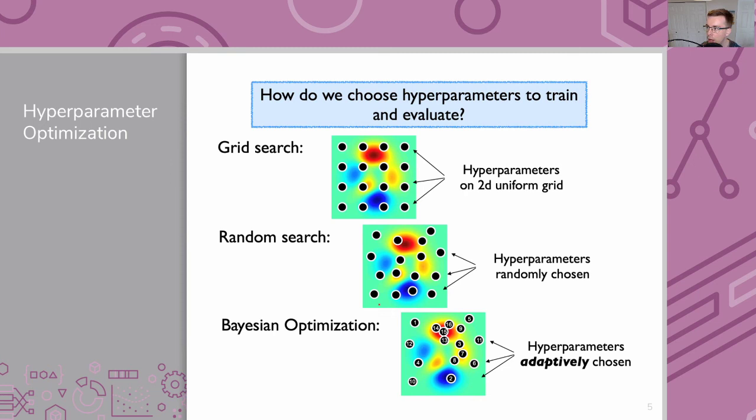Since with grid search, if you specify one hyperparameter setting for one hyperparameter, like say this one, you have to spend an equal amount of time on all combinations of that one, which may or may not be good. And it's hard to say because we don't know what the actual function actually looks like. But generally, random search kind of spreads things out enough that you usually will find a better solution. Not always, but generally.